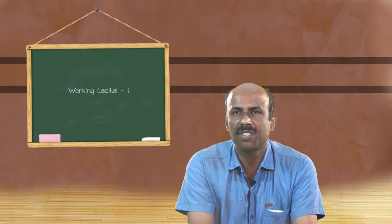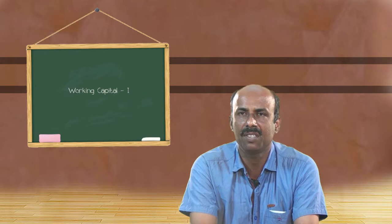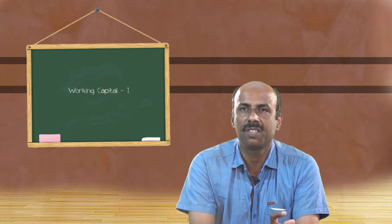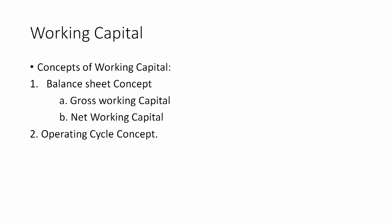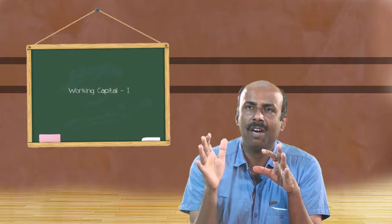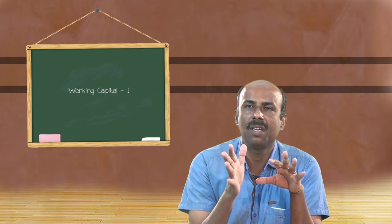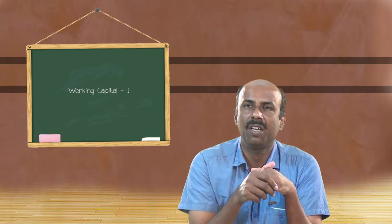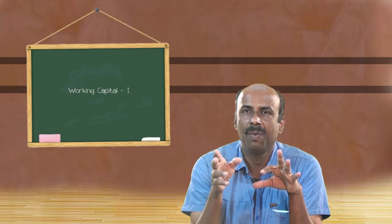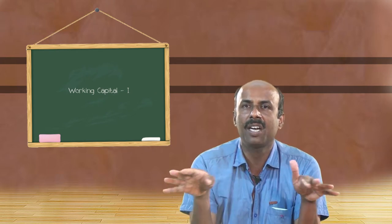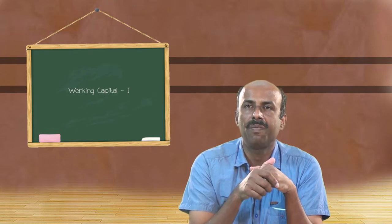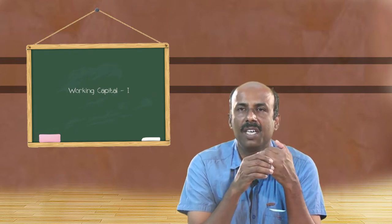Looking at the concept of working capital, there are two types: one is the balance sheet concept and another is the operating cycle concept. Under the balance sheet concept, looking at both the asset side and the liability side, working capital can be broadly classified into gross working capital and net working capital.